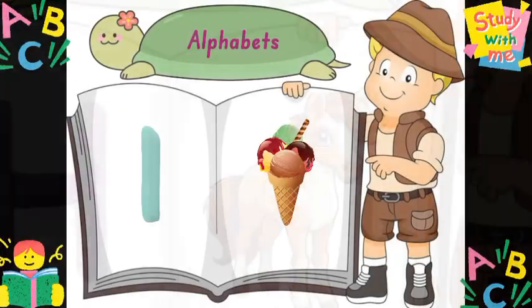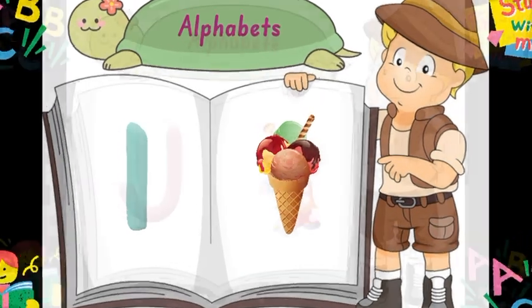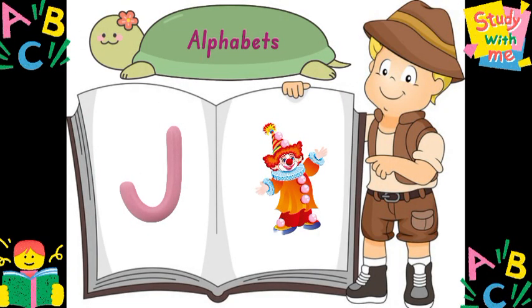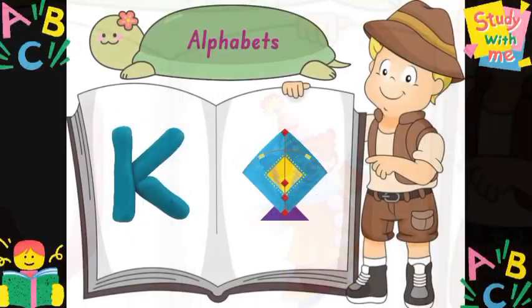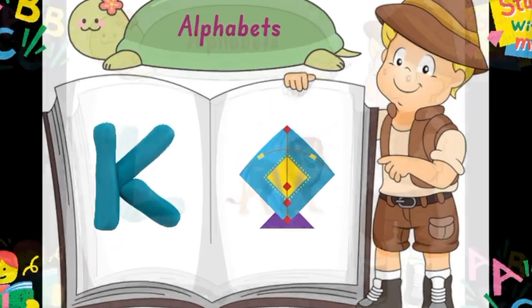I for Ice Cream, J for Joker, K for Kite.